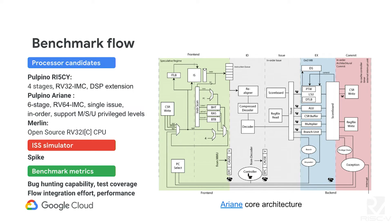For the benchmark, we took three cores. First, a PinoRisky core — a four-stage 32-bit core with DSP extension. Then a Rian core, a six-stage 64-bit core that can boot a Unix-like system. And also a Marine core, a 32-bit core. We use Spike as our ISS simulator to give our reference output. I want to thank all the designers for supporting us in this iteration — it wouldn't have been possible without their help. It's one of the beauties of open-source collaboration: we found a lot of valuable bugs before tape-out, and the cores helped us improve our flow as well.